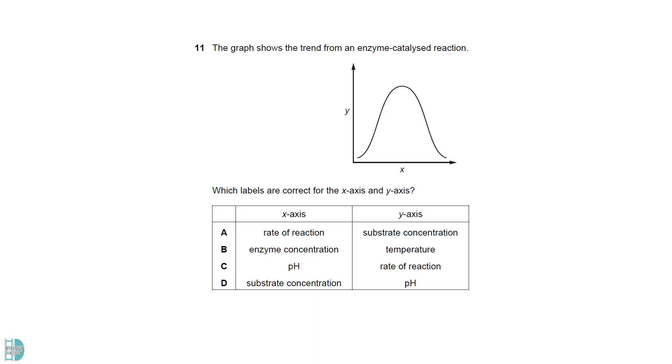The x-axis is for the independent variable, so A is wrong. The substrate concentration should yield a graph that increases and then levels off. B is incorrect because the y-axis is another independent variable.